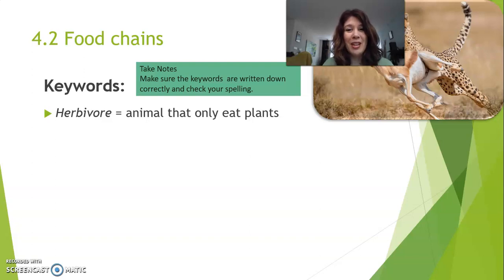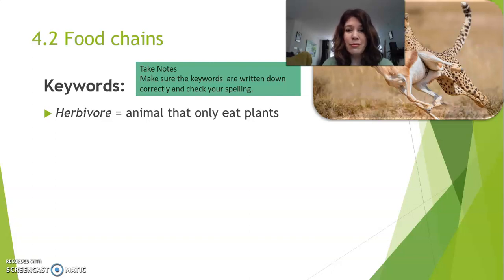A herbivore is an animal that only eats plants. Can you think of an example? Well, I can. Maybe a rabbit or a panda.